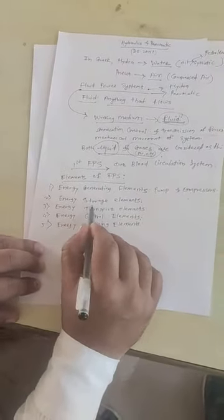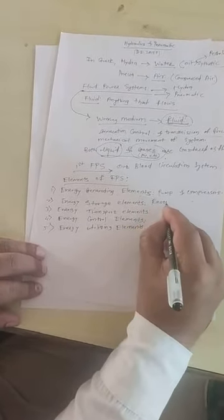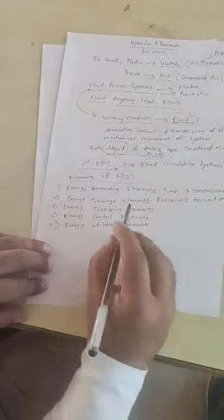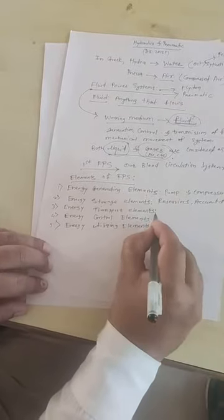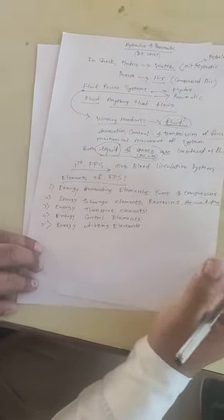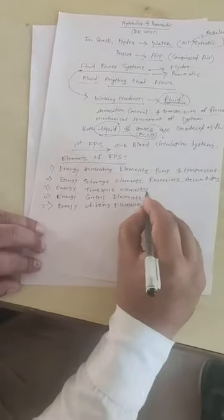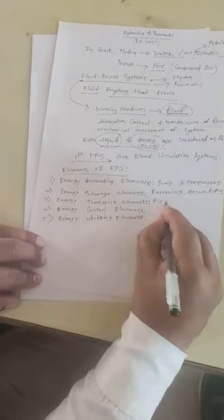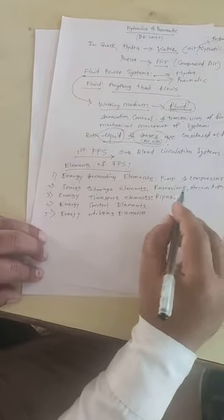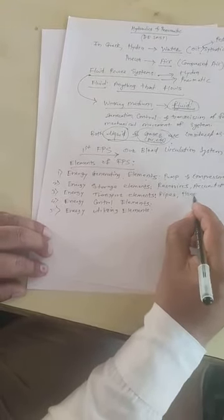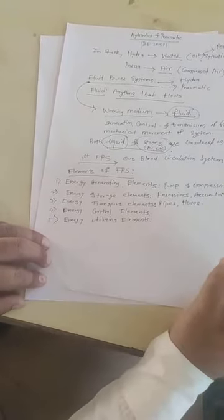Next are the energy storage elements. The examples are reservoir, accumulators. Next are the energy transport elements. Transport means transmission of energy from one form to another form takes place by using the working medium as a fluid. In case of hydraulics, it is an oil, and in case of pneumatic, it is a compressed air. For carrying a compressed air, transport elements are pipes, and for the oil, since it has a high pressurized fluid, there are the hoses used in the hydraulic system.